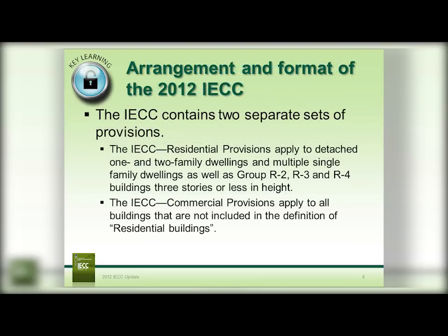The 2012 is arranged much differently than the 2009 was. It contains two complete separate sets of provisions. The distinction between residential and commercial is still the same as it was in the previous codes. Residential provisions apply to detached one and two family dwellings and multiple single family dwellings, which are townhomes, as well as group R2, R3, R4 buildings, three stories or less in height.